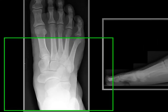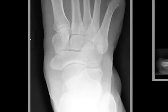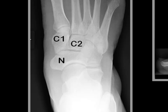First, some normal anatomy. The tarsal bones consist of the first cuneiform or the medial cuneiform, the second cuneiform. The third cuneiform is not well seen on this particular frontal view — it's also sometimes referred to as the lateral cuneiform. The tarsal navicular, here with the N on it, the cuboid, the talus, and the calcaneus.